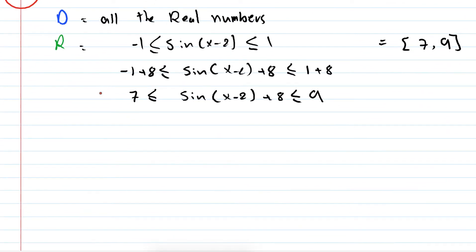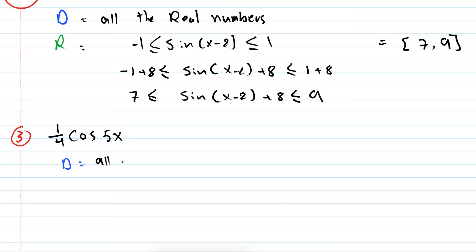Cosine works exactly the same way. For example three, suppose I have (1/4) cosine(5x) - 3, and I'm asked for the domain and range. The domain is all the real numbers.